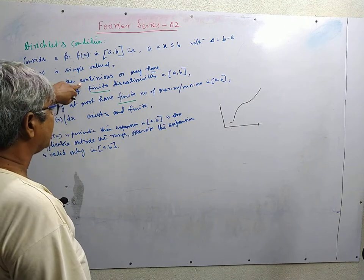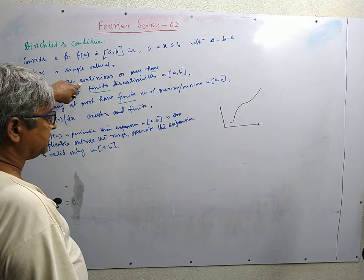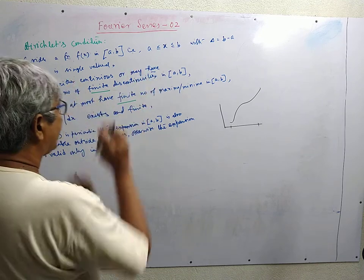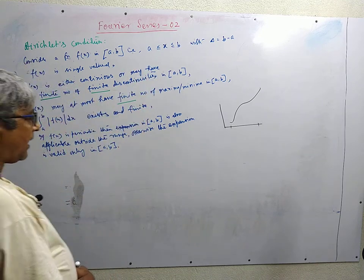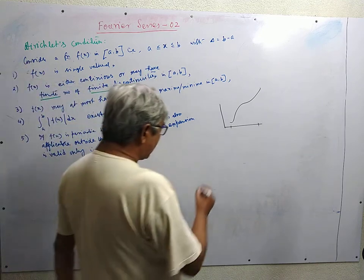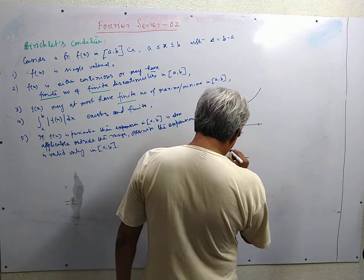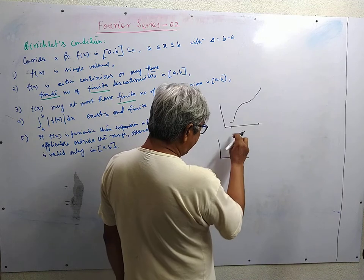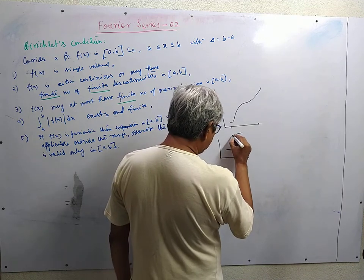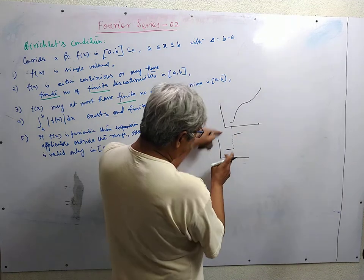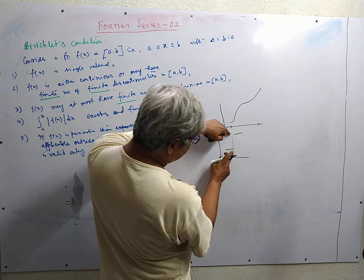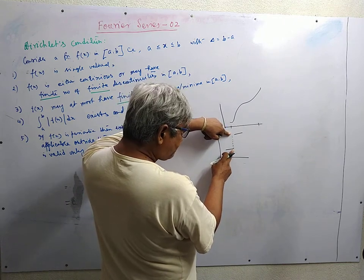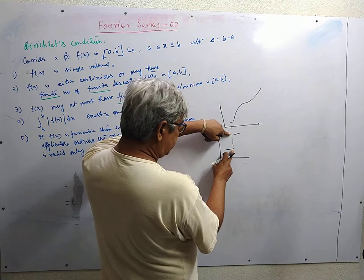If the function is not continuous, it may have a finite number of finite discontinuities. Consider a function like this — the left hand limit is this much and the right hand limit is this much, and the function is discontinuous. The amount of discontinuity is finite, so this function has a finite discontinuity.